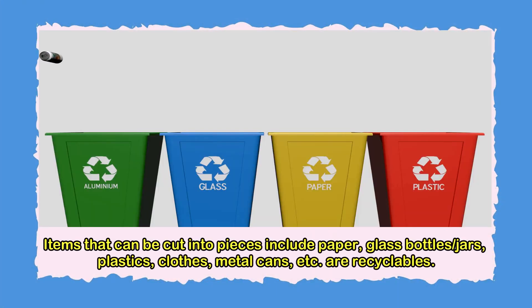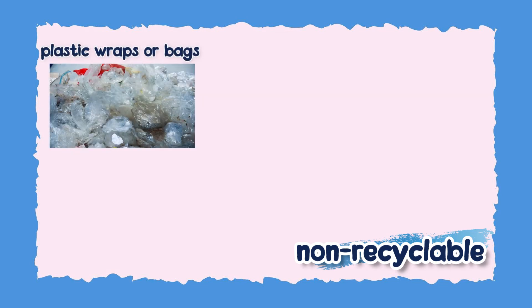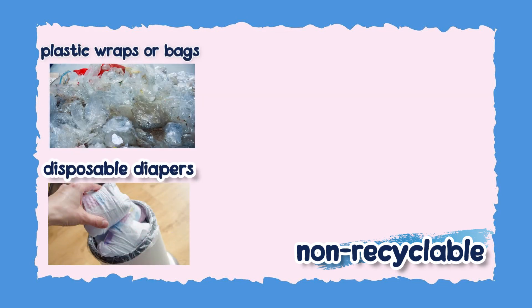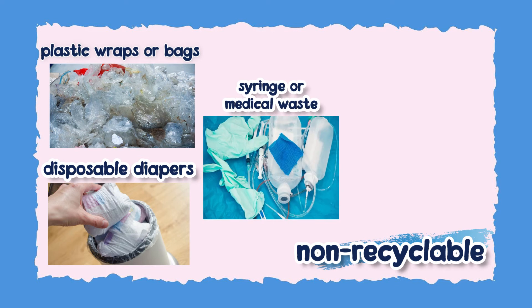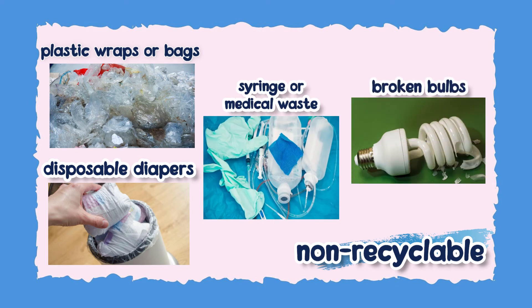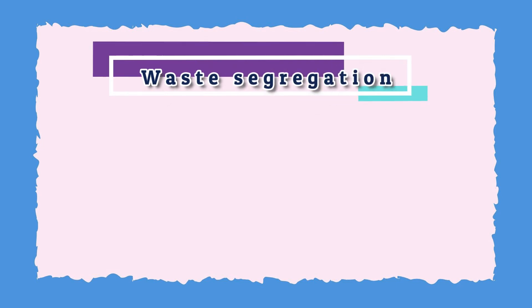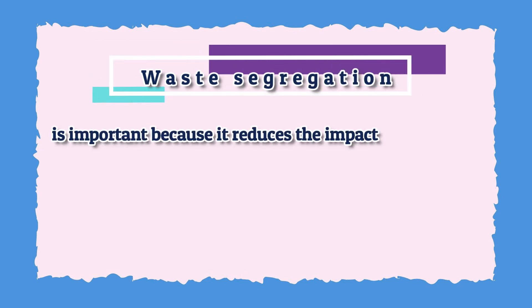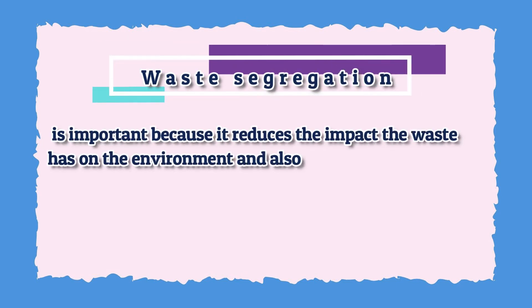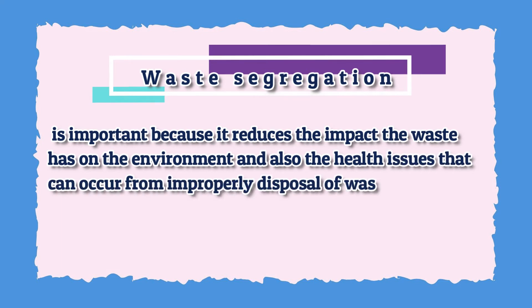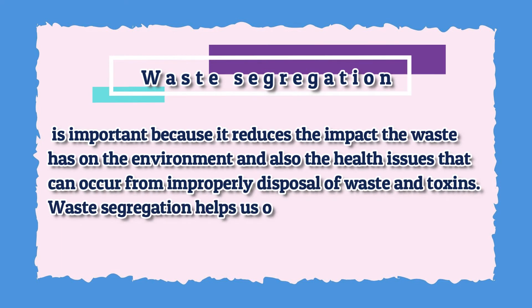Items that can be recycled include paper, glass bottles or jars, plastics, clothes, metal cans, and more. Meanwhile, items that cannot be recycled include used plastic wraps or bags, disposable diapers, syringes or medical waste, broken bulbs, and more. Waste segregation is important because it reduces the impact of waste on the environment and the health issues that can occur from improper disposal of waste and toxins.